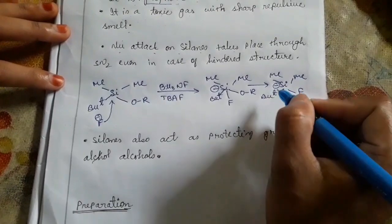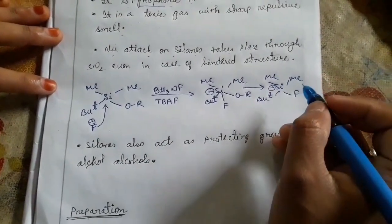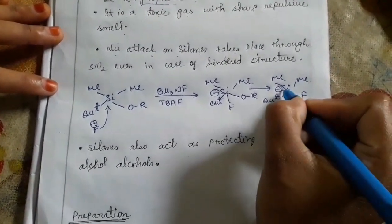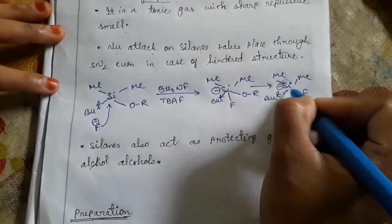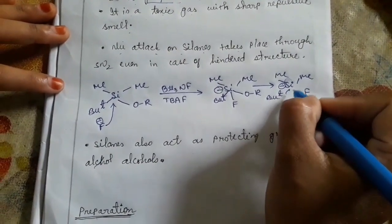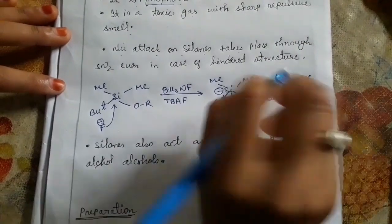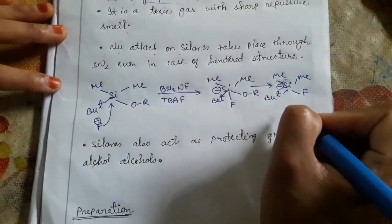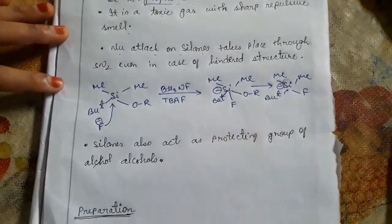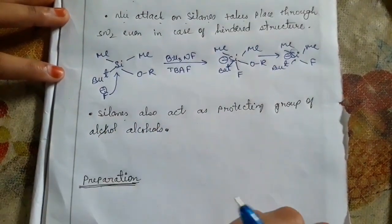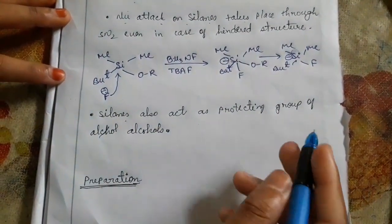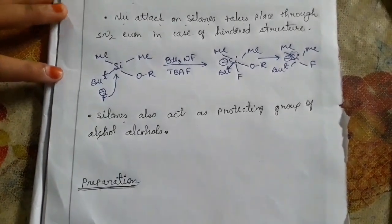Secondly, silane can hold more number of electrons because silicon can provide a target for the nucleophile, so it can hold more electrons. The next property is that silane also acts as a protecting group for alcohols.